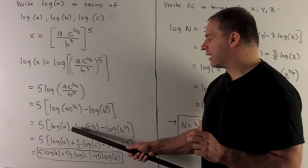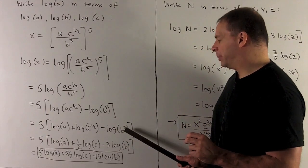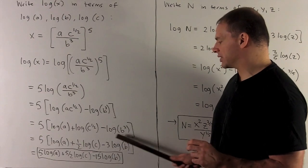I can bring the 1 half out in front of the log here. And then on the B cubed, I can bring the 3 down out in front of this log.